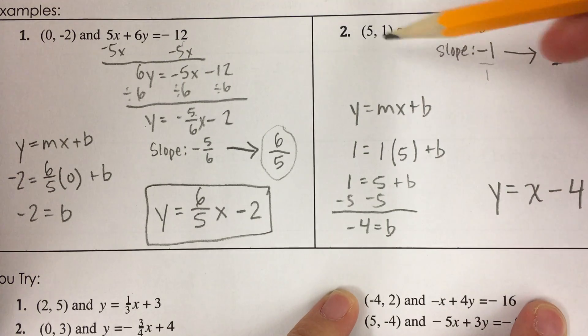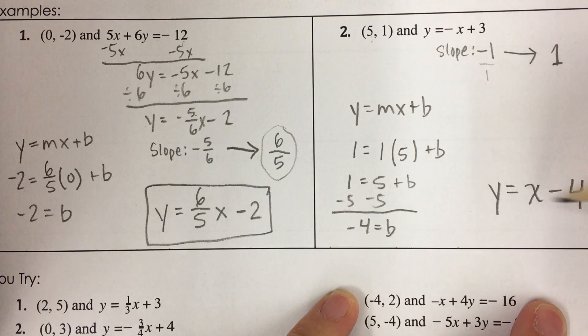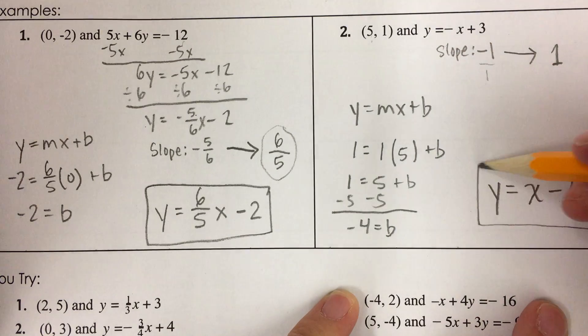And it goes through this point. So if I plug in 5 here, 5 minus 4 is 1. Okay, and that's my answer.